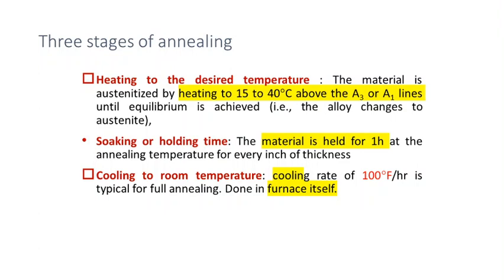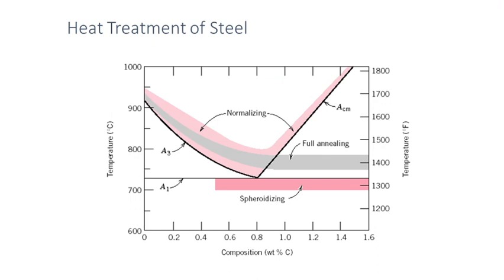The three stages of annealing: Stage one is heating to the desired temperature range, where the material is austenitized by heating 15 to 40 degrees above the A3 line or A1 line in the iron-carbon diagram until the complete composition changes to the austenitic phase — this is called the austenitizing process. Stage two is the soaking time, where the material is held at that austenitizing temperature for a longer period, even up to one hour. Stage three involves cooling to room temperature, normally done inside the furnace.